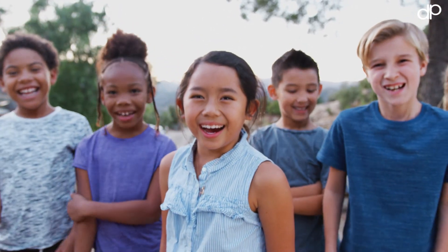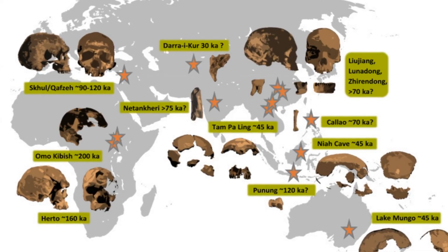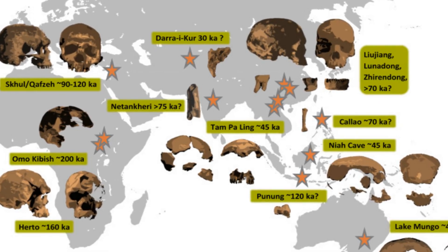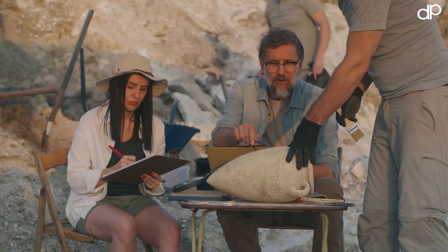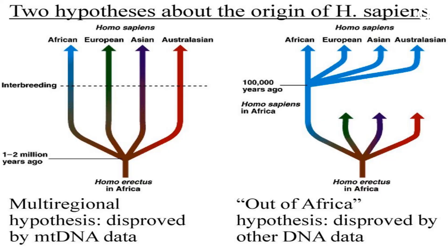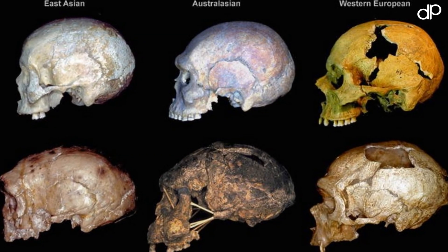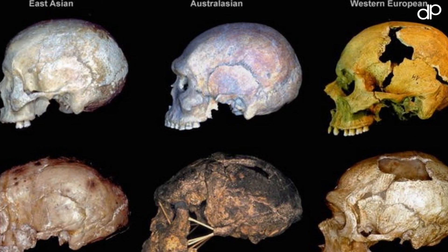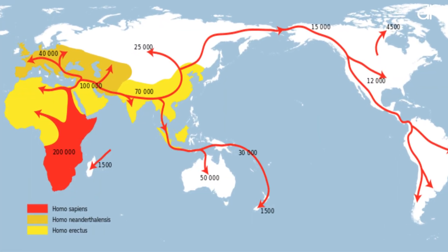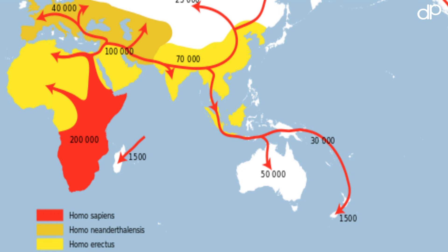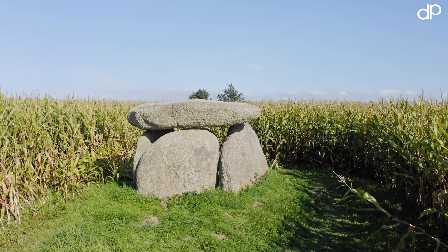The Out of Africa theory has had a profound impact on our understanding of human evolution. Prior to the acceptance of the theory, there were a variety of competing models, including the multi-regional hypothesis, which proposed that modern humans evolved from multiple ancestral populations in different parts of the world. The Out of Africa theory challenged these earlier models and provided a new and comprehensive explanation for the origin and evolution of modern humans, showing that modern humans originated in Africa and later migrated to other parts of the world, and that the diversity of human populations is a result of these migrations.